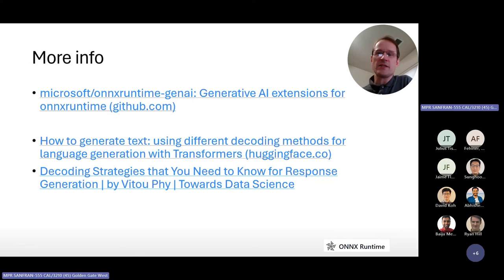So, for more information, I provided some links on this slide. The first one is to the Onyx Runtime Gen AI project itself. I also provided some links to documents that talk about the details of top K and top P scoring, and also beam search, for anybody interested in really getting into the low level details of how it works.